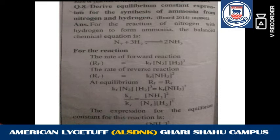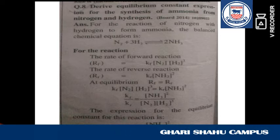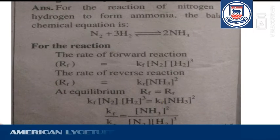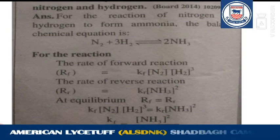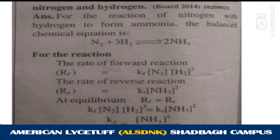Question number 8 requires you to write the balanced chemical equation of ammonia and then write the equilibrium constant expression. The balanced chemical equation is: N₂ + 3H₂ ⇌ 2NH₃ — giving 2 molecules of ammonia.